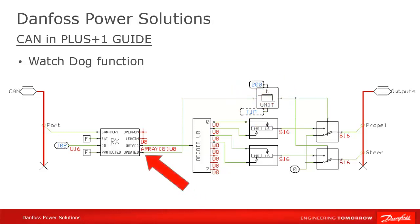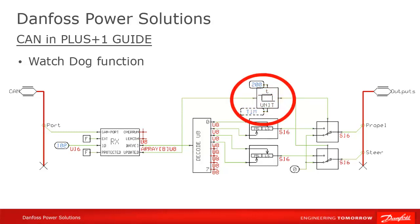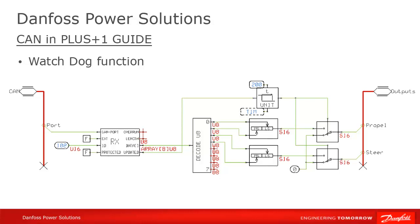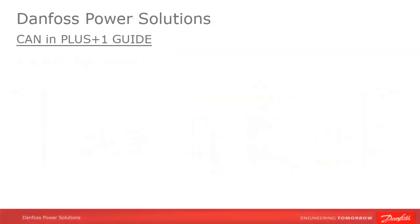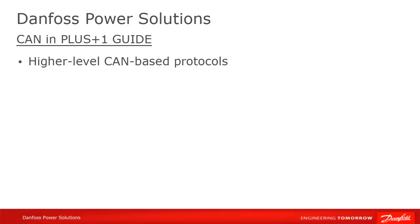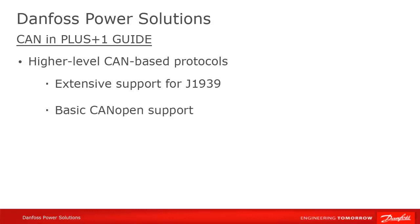The UPDATED signal will go to FALSE the loop after the last received message, but instead of letting that signal pass directly through to our program, we'll hold it for a certain delay — in this case 200 milliseconds — after which we let it pass. If UPDATED goes TRUE again during that time, the timer will reset. So until now, we've been looking at the low-level CAN transmit and receive components, which are available to all GUIDE developers, including those using the free express license. We also have extensive support in our function block library for the higher-level CAN protocol J1939 and basic support for CAN Open.